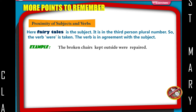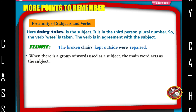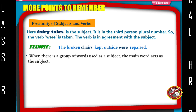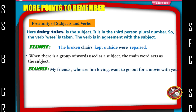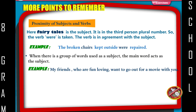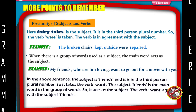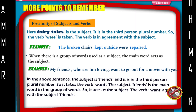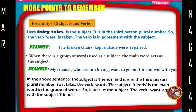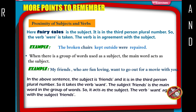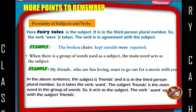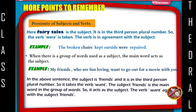Example: The broken chairs kept outside were repaired. When there is a group of words used as a subject, the main word acts as the subject. Example: My friends who are fun-loving want to go out for a movie with you. In the above sentence, the subject is 'friends', which is in the third person plural number, so it takes the verb 'want'. The subject 'friends' is the main word in the group of words, so it acts as the subject. The verb 'want' agrees with the subject 'friends'.